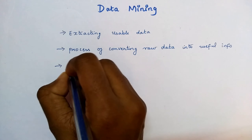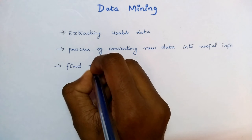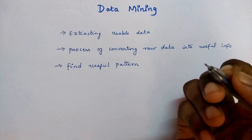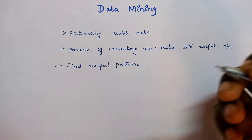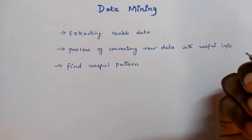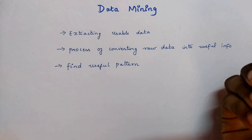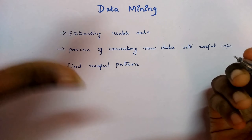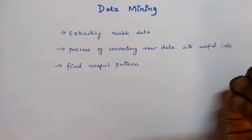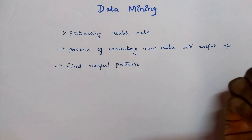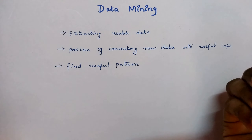We can also find a useful pattern. For example, if I go shopping and I buy a diaper, it means I have a baby or a family member has a baby. So if I buy a diaper, there may be a chance I also buy milk. Using data mining we can find such patterns very easily from all the data.